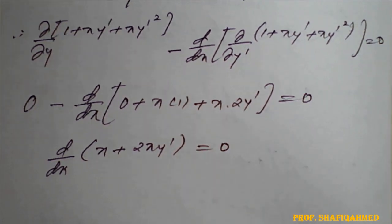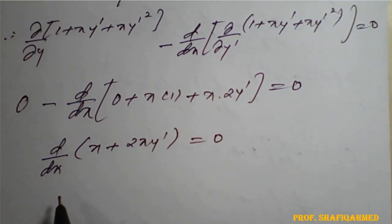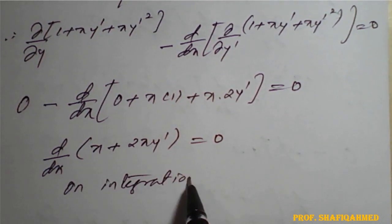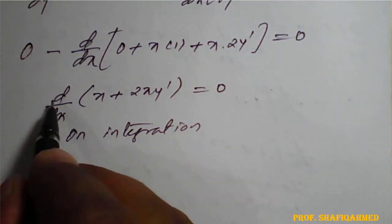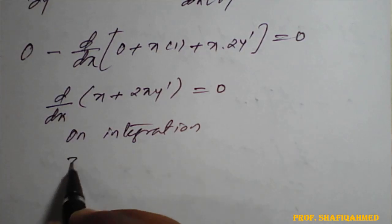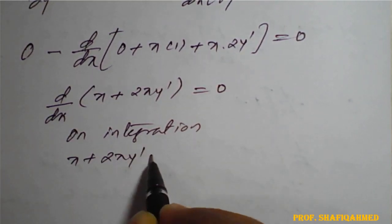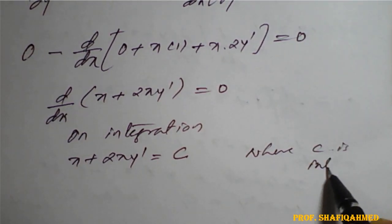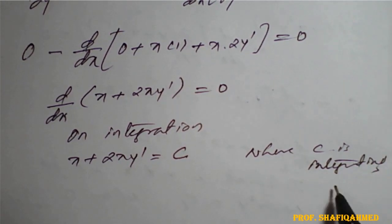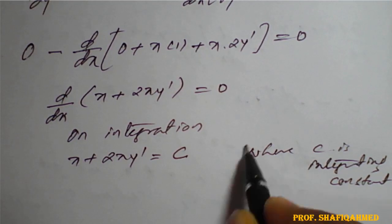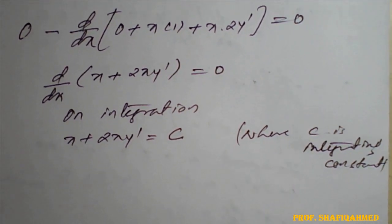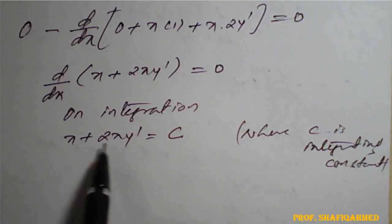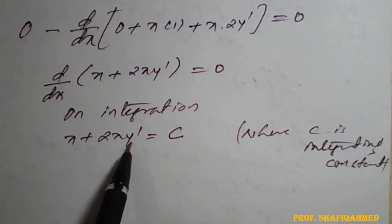Now we need to eliminate this d by dx, so on integration, d by dx will vanish, so we are going to have x plus 2x y dash equal to integrating constant c, where c is the integrating constant.